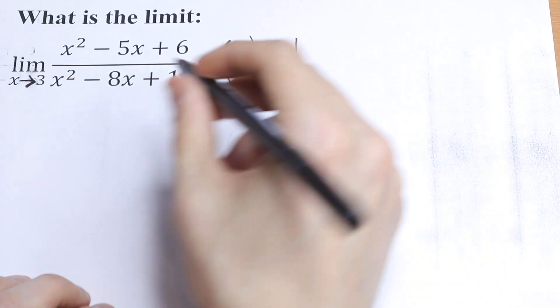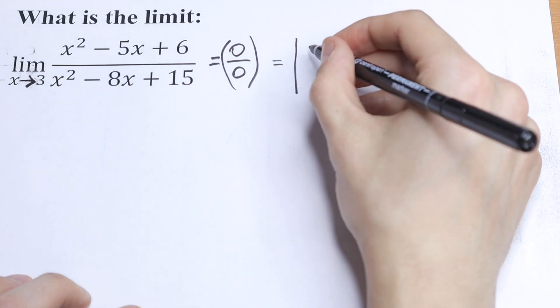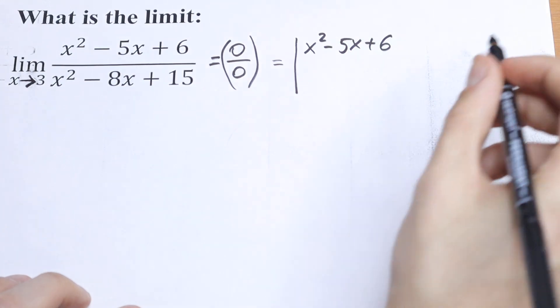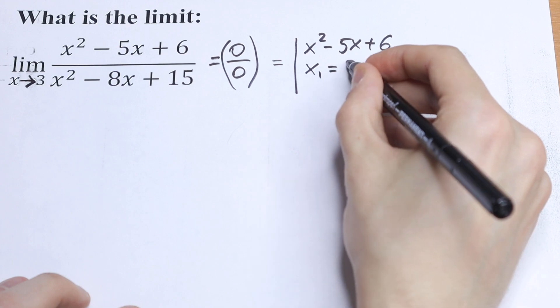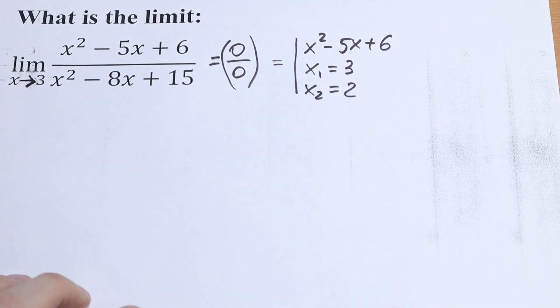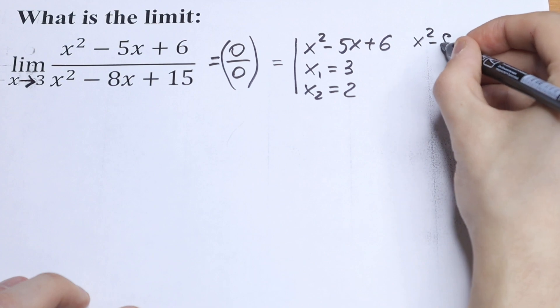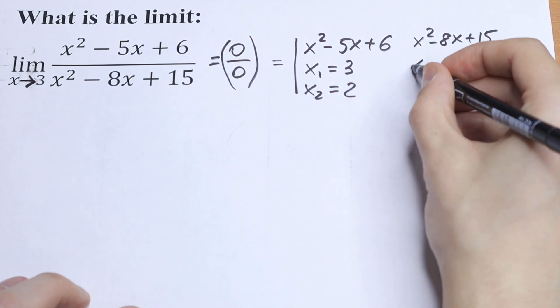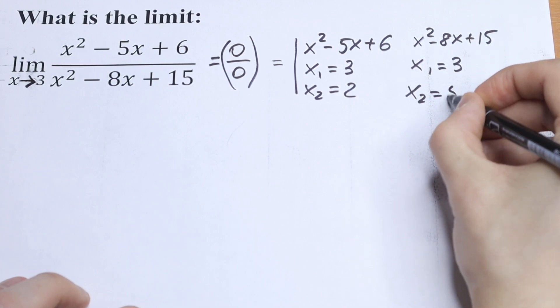So how can we do this? First of all, we have in our numerator a quadratic equation: x-square minus 5x plus 6. So the roots to this equation will be x-first equal to 3 and x-second equal to 2. And let's write the equation from our denominator: x-square minus 8x plus 15. x-first from here will be equal to 3 and x-second will be 5.